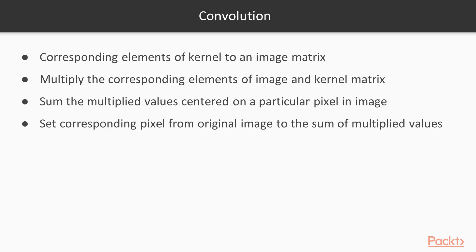Convolution in the context of image processing is defined as the sum of the product in the corresponding elements of a kernel matrix to an image matrix. Let's try to understand what this means. Given a kernel matrix, multiply the corresponding elements of the image matrix and kernel matrix, and sum the multiplied values centered on a particular pixel in the image.